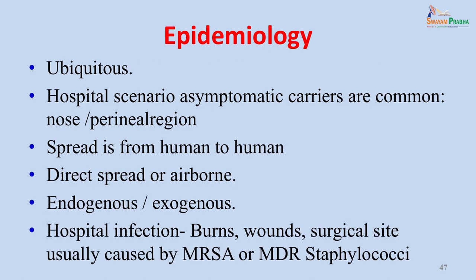Epidemiologically, Staphylococcus aureus is ubiquitous, present in the environment and on human skin. In the hospital setting, asymptomatic carriers are common, with the nose and perineal region being very common carriage sites. Spread is usually human-to-human, either by direct contact or airborne from the environment and contaminated surfaces. It can be endogenous from the patient's own nasal carriage, or exogenous from outside. Hospital infections are very commonly seen in burns, wounds and surgical sites, usually caused by MRSA or multidrug-resistant staphylococci.